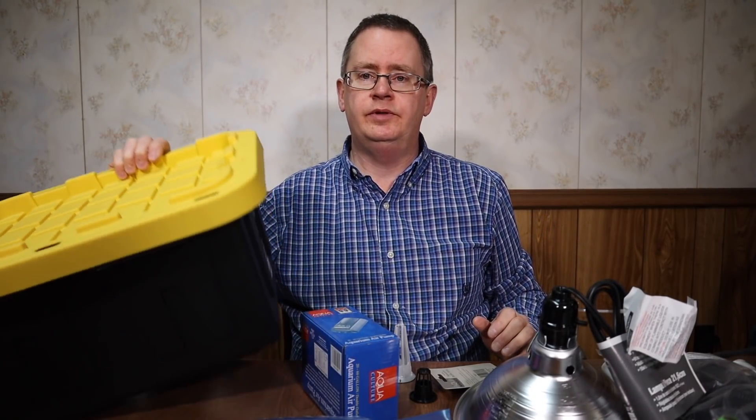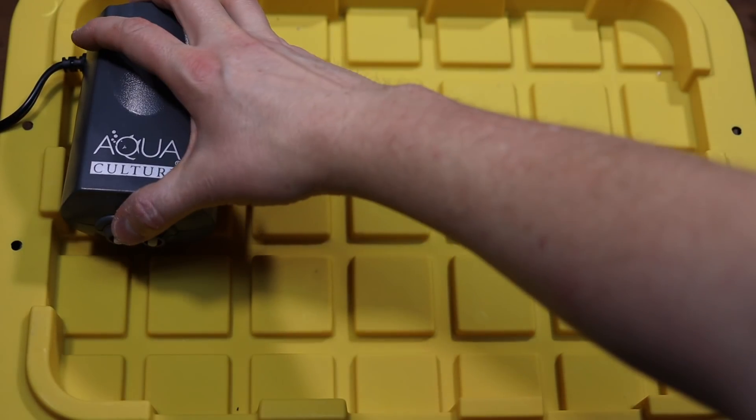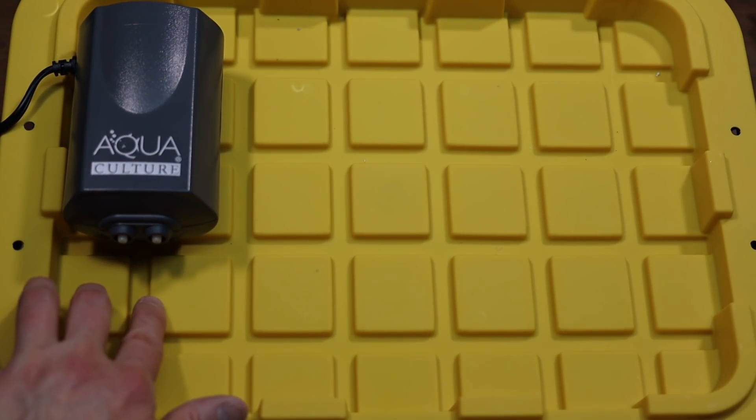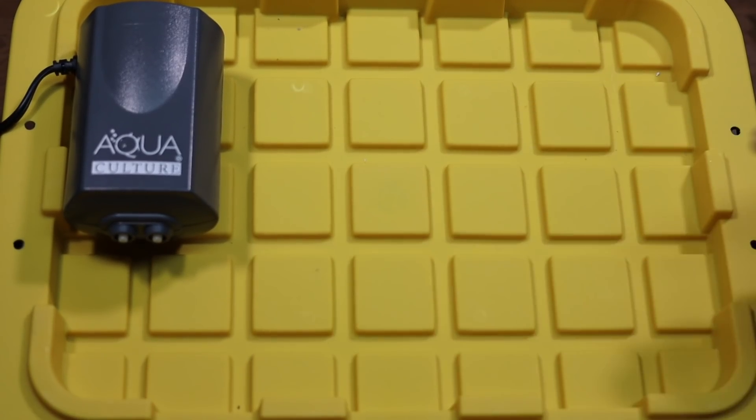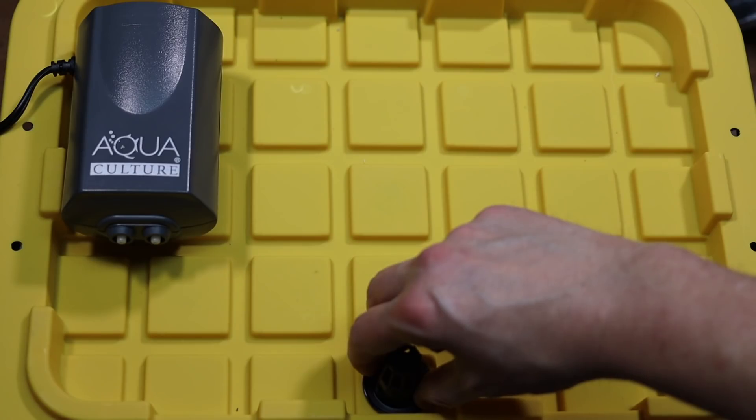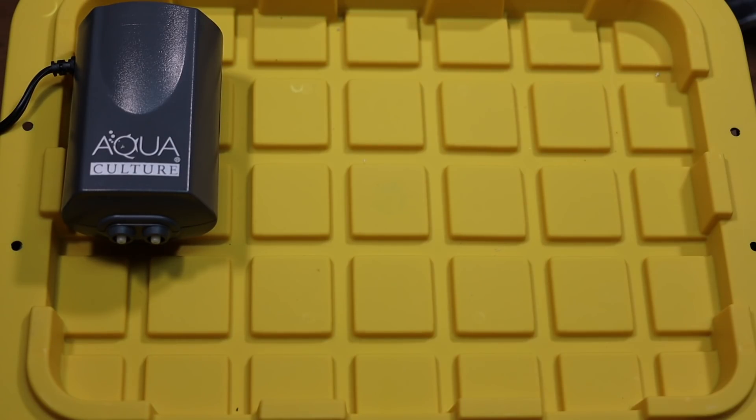Let's go ahead and get started putting this together. I'm going to have the pump here just sitting on top. I'm going to drill two holes around here for the air tube. So I'm going to use most of these for growing. I'm going to do 18 holes, any of these that can easily fit. I can always expand it later.